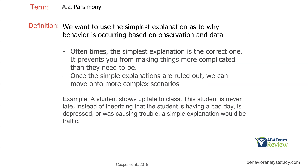Parsimony: use the simplest explanation as to why behavior is occurring based on observation and data. Too often, because we're smart people who understand behavior, we look for complex reasons why things occur. In reality, behavior is often quite simple — just a simple interaction with the environment. So before you go complex, think simple. The simplest explanation is often the correct one, and the easier the explanation, the easier it will be to treat or change that behavior. It also prevents making things more complicated, which leads to more time, resources, and complications. Once you rule out simple explanations, then you can move to more complex scenarios.